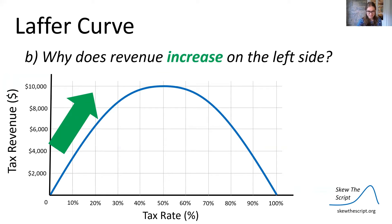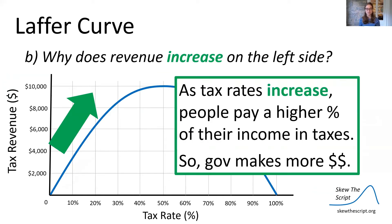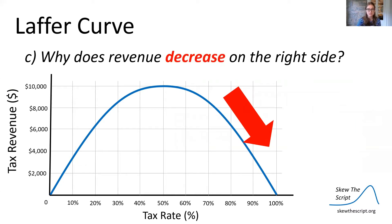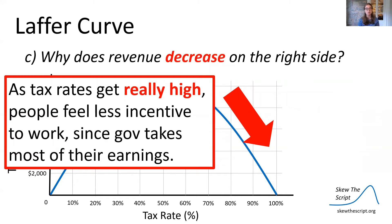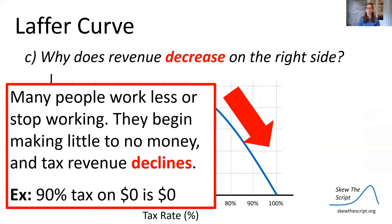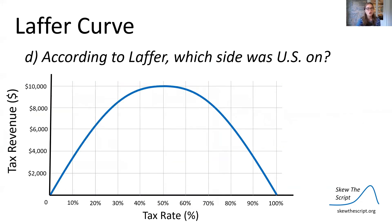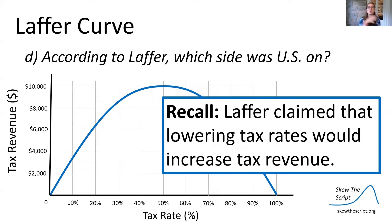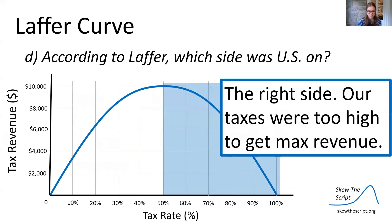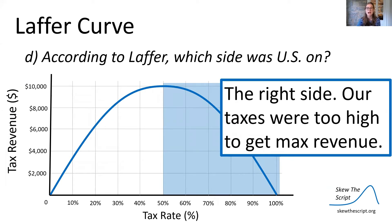Why does revenue increase on the left side? As tax rates increase, people pay a higher percentage of their income in taxes, so the government makes more money. Why does tax revenue decrease on the right side? As tax rates get really high and approach 100 percent, people feel less incentive to work since the government takes most of their earnings. Many people work less or stop working altogether, making little to no money, and tax revenue declines. According to Laffer, which side was the United States on? He claimed that lowering tax rates would increase tax revenue, so he thought the US was on the right side — taxes were too high to get maximum revenue.